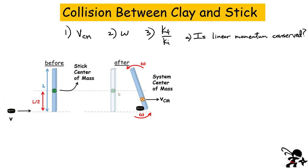Let's define a few things. We have this puck — we'll assume its mass is m. And for this problem, let's also assume the mass of the stick is also m. That's a specific case; you could make it general, which makes the math harder, but let's keep it within reason. We also assume the puck is going to hit the bottom of the stick and stick to it.